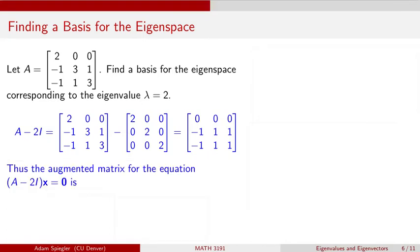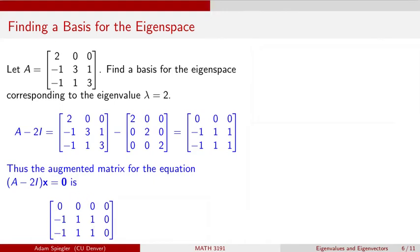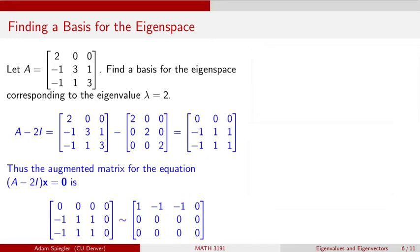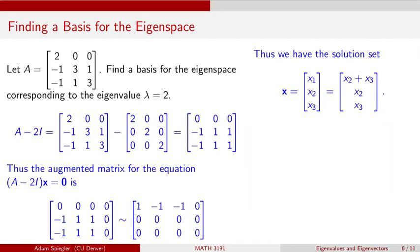We want to solve this homogeneous equation (A minus 2I) times some vector x equal to the zero vector. Because we're told λ = 2 is an eigenvalue, there should be a non-trivial solution. We can set up an augmented matrix for this homogeneous equation by adding a last column of zeros. After row operations, it is row equivalent to the reduced row echelon form matrix with top row 1, -1, -1, 0, and the next two rows all zeros. We can see we have one pivot column, so x2 and x3 are free variables.